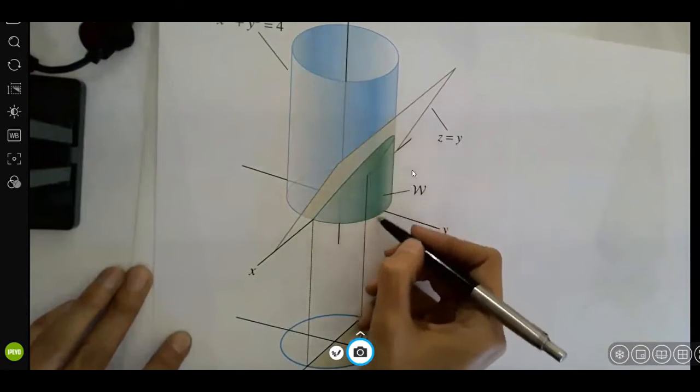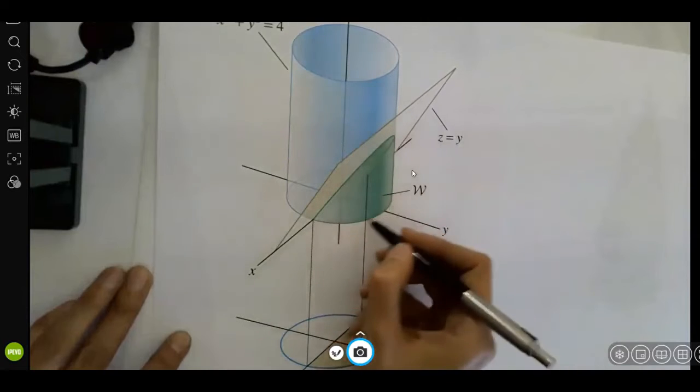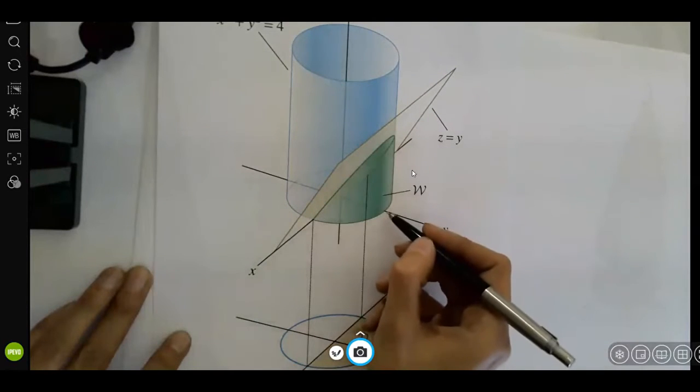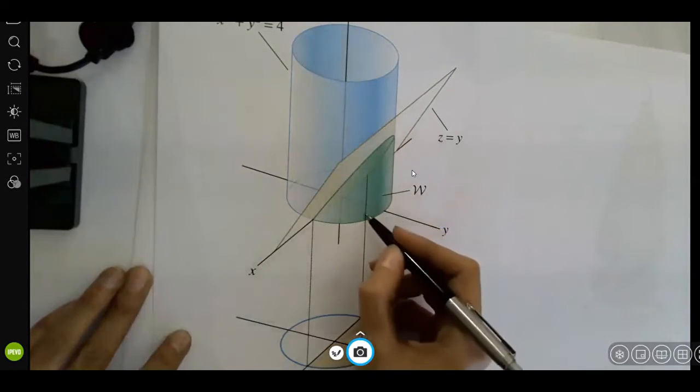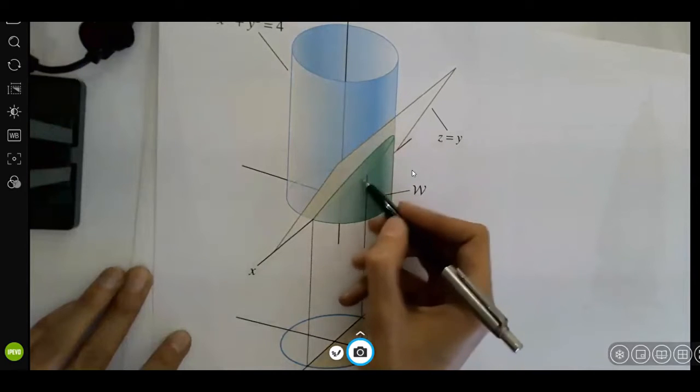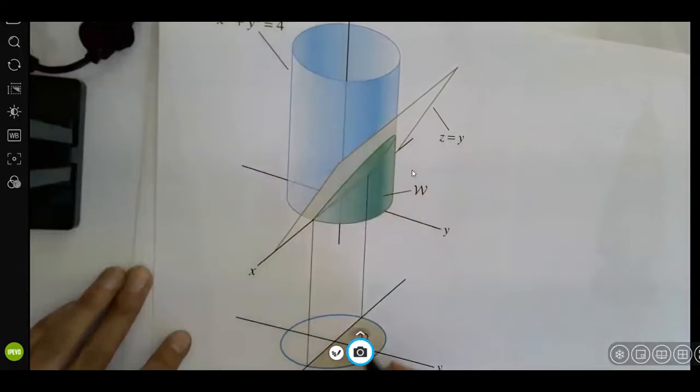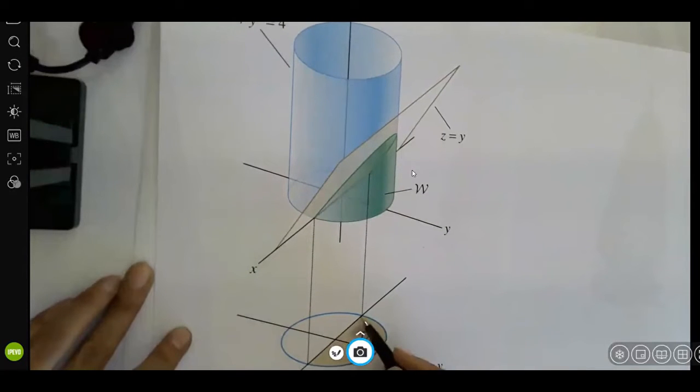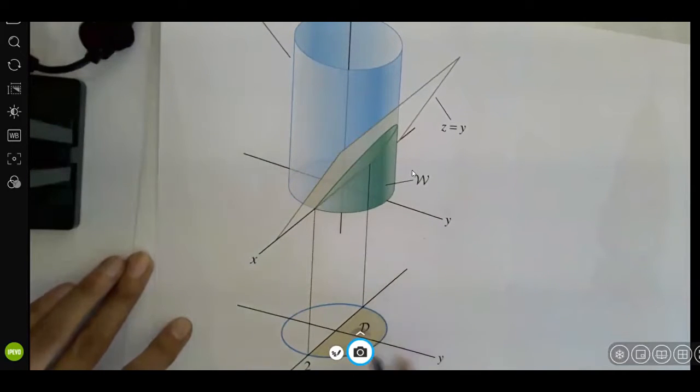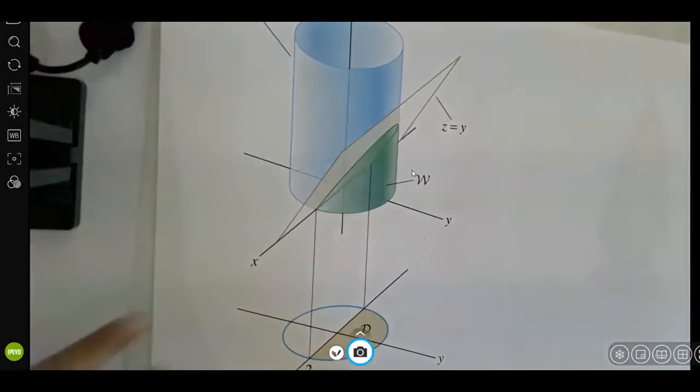So, we're interested in this portion. The projection of this portion in xy-plane is this nice region down here. What is this and how do we find and identify the boundaries? This is our goal.